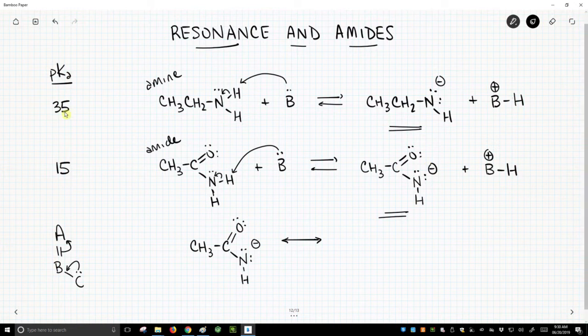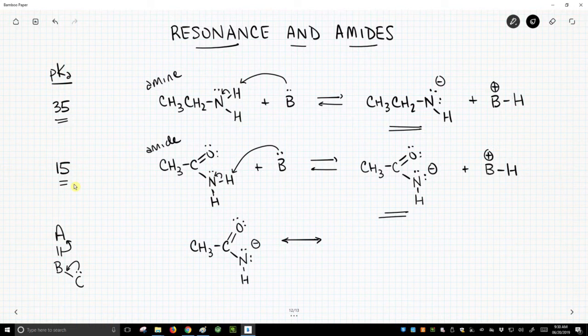However, the pKa's are very different. The amine has a pKa of around 35, and the amide has a pKa of about 15. So big differences, and we're going to explain this through resonance, no surprise.